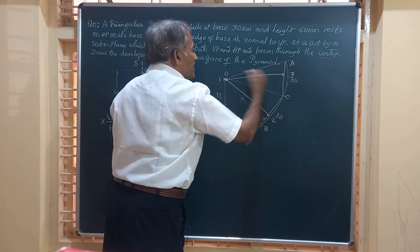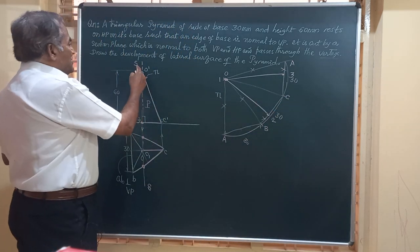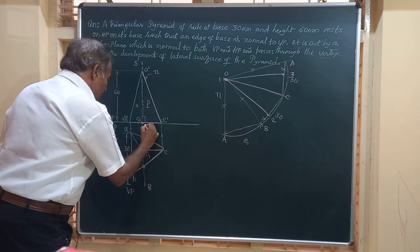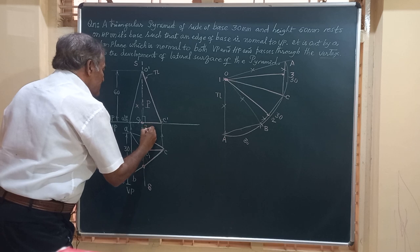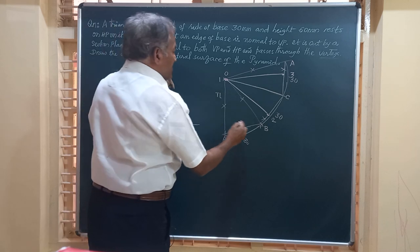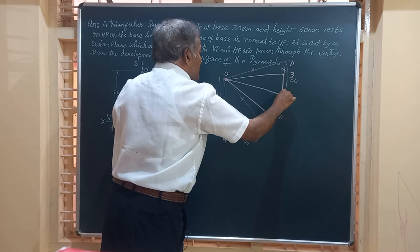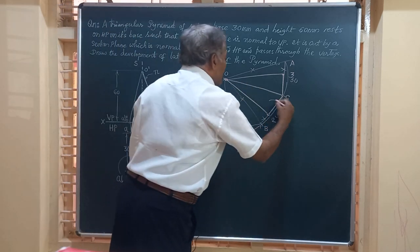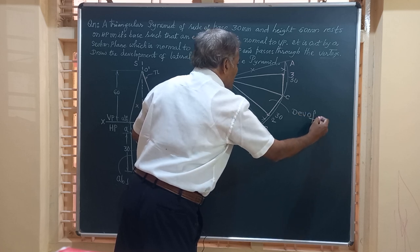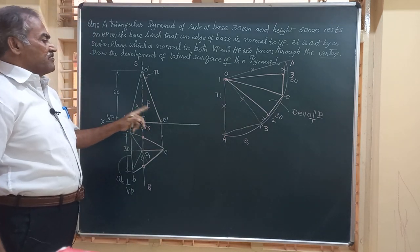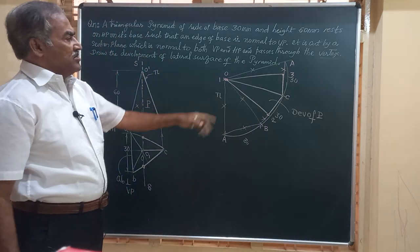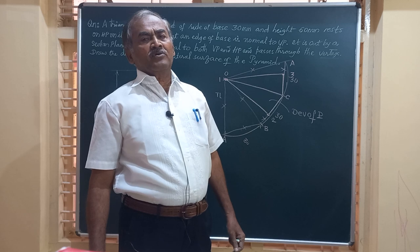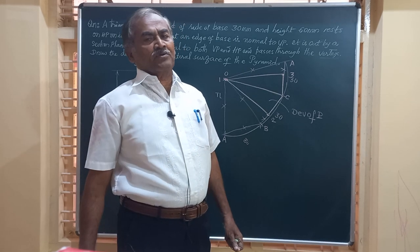Since OB is removed that line does not exist, and since OA is removed that line does not exist either. However, the slant edge OC is retained and shown as a dark line. Calling the vertex point as 1, and the two base edge cut points as 2 and 3, we join 1 to 2 and 1 to 3 by straight lines. The retained portion — one, three, C, two, one — gives you the development of the lateral surface of the triangular pyramid cut by the section plane normal to both HP and VP.